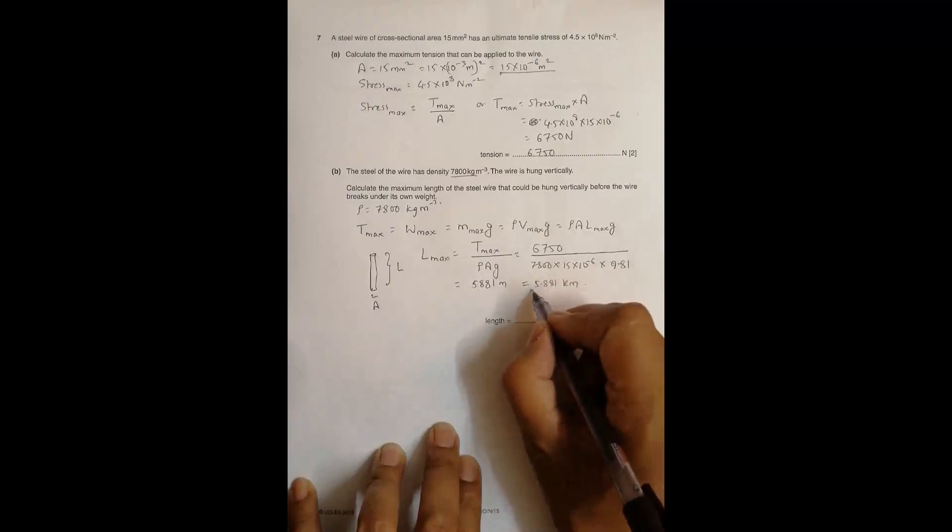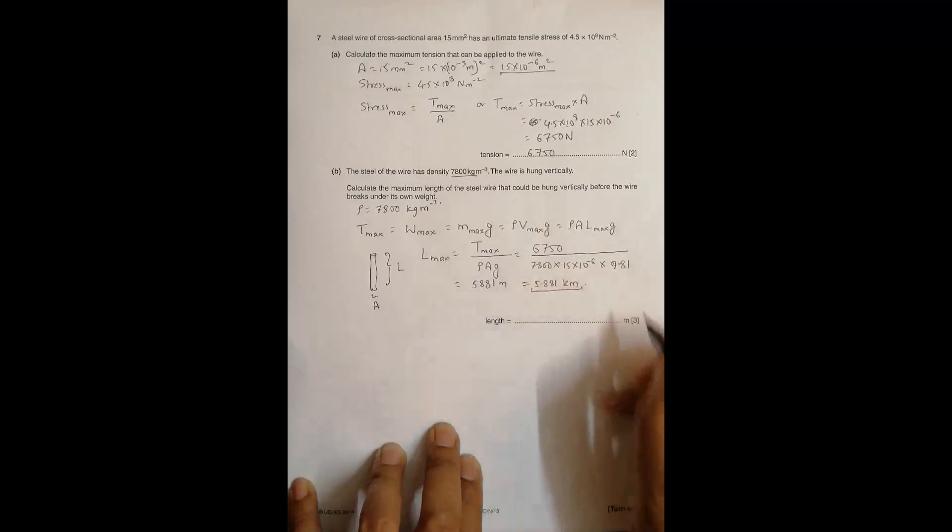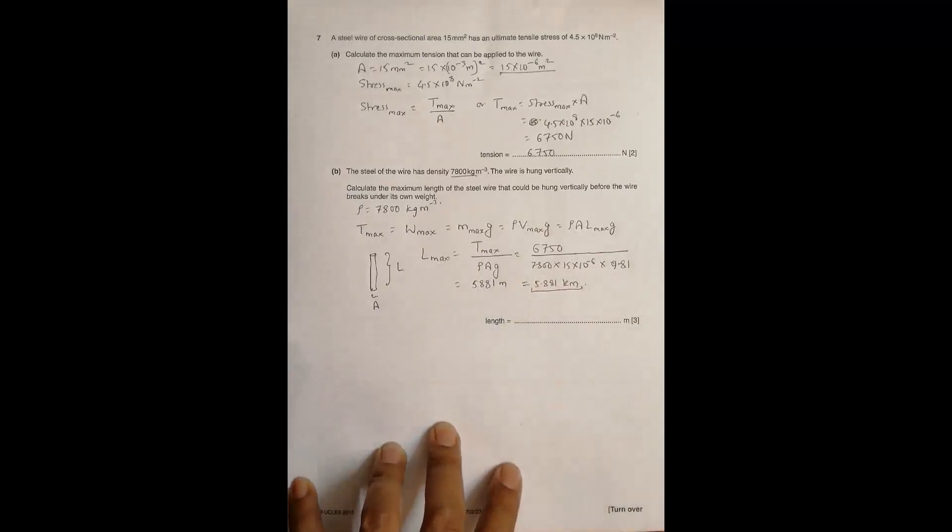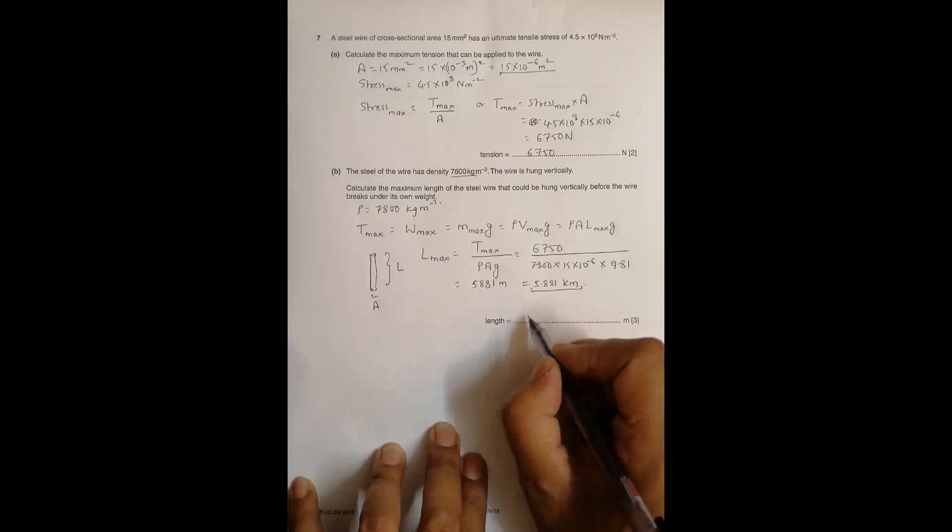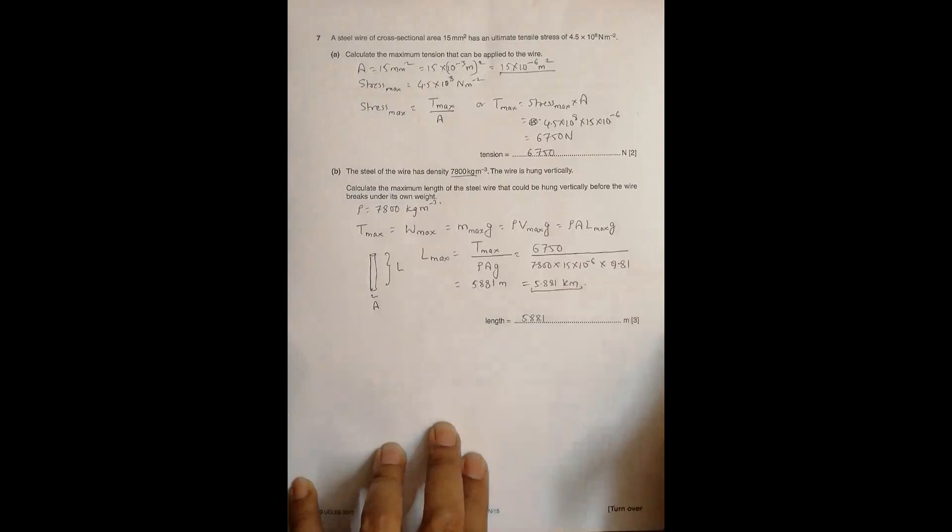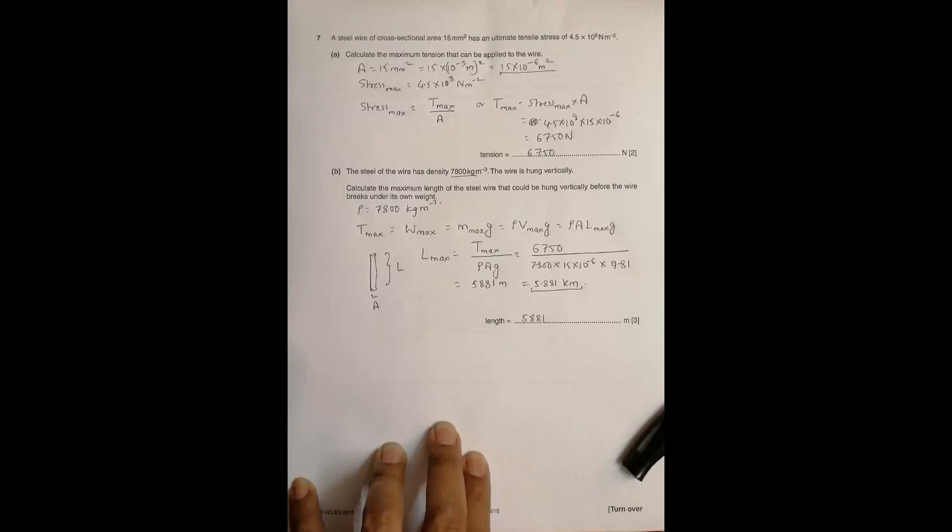And that's equal to, in normal words, 5.881 kilometers. I am converting into kilometers to make you aware about the length that is required. So it is 5881 meters. It means such a huge length is required so that it will snap under its own weight. So we cannot suspend a wire of infinite length because of these weight issues which exceed its ultimate breaking force or ultimate tension that it can suffer.